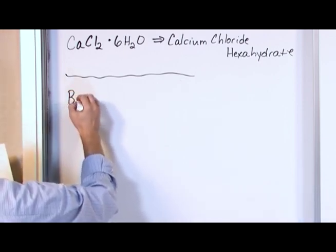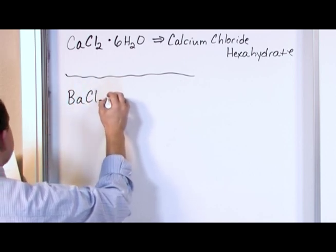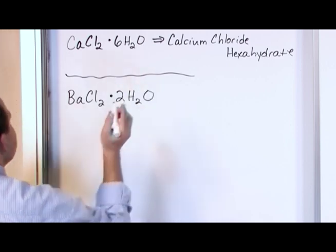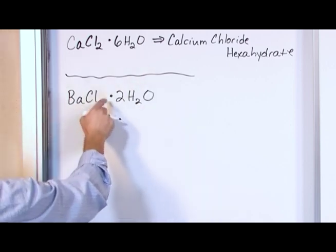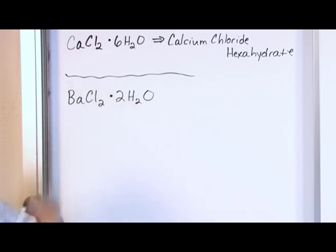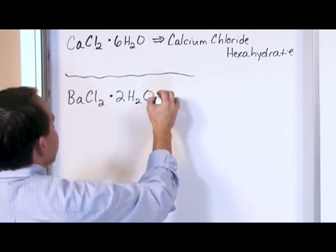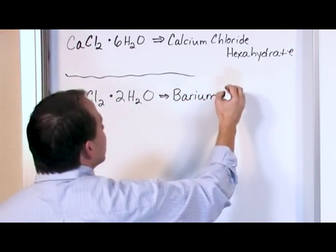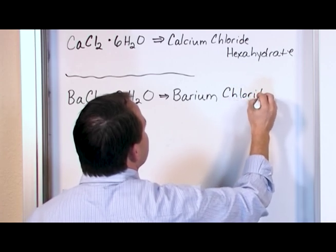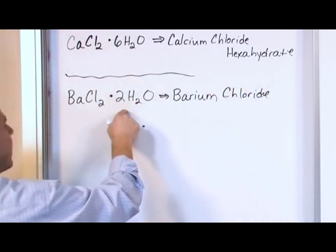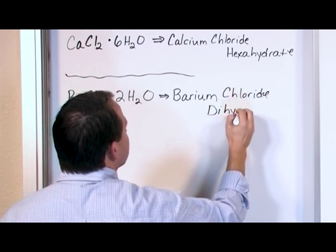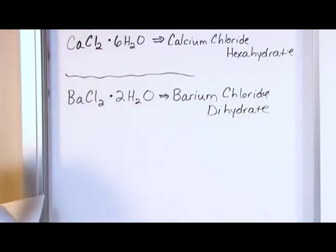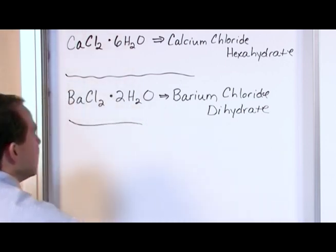What about BaCl2·2H2O? That means I have this barium chloride, but for every one of these formula units I have two water molecules somewhere nearby. So this is barium chloride dihydrate. The dihydrate comes from the fact that there's two of them, di meaning two, using the same basic prefixes from what we have used in the past for the molecular compounds.